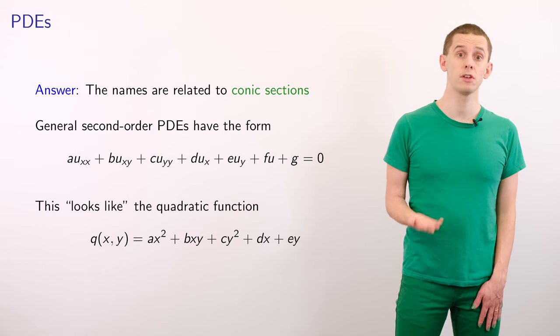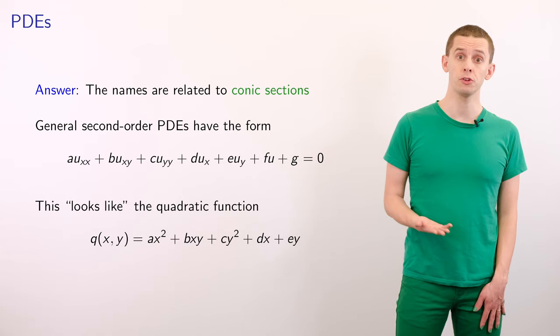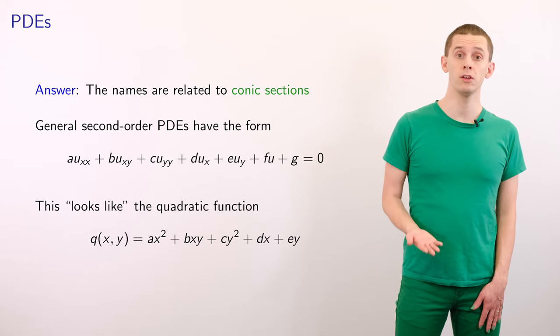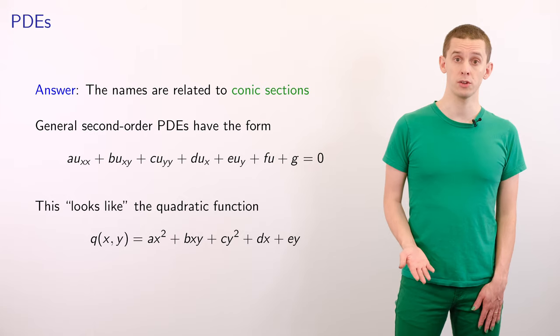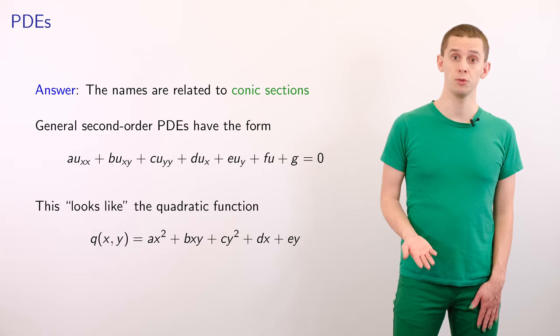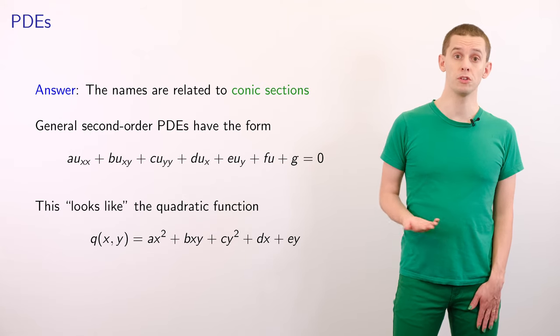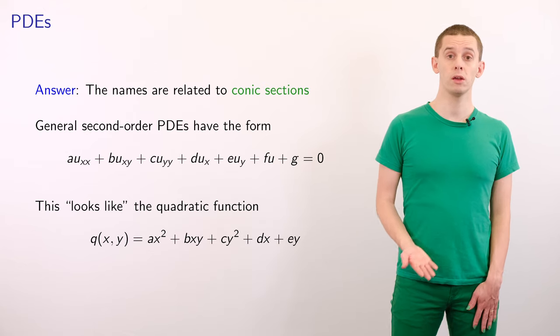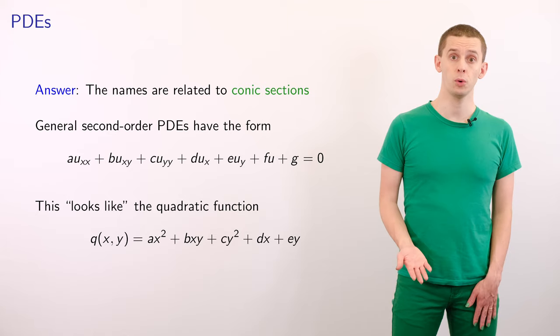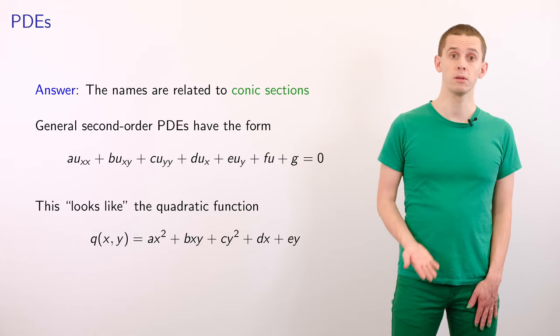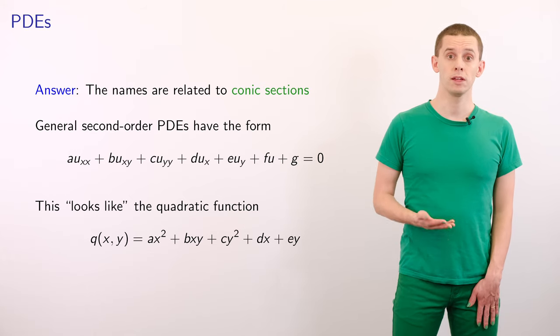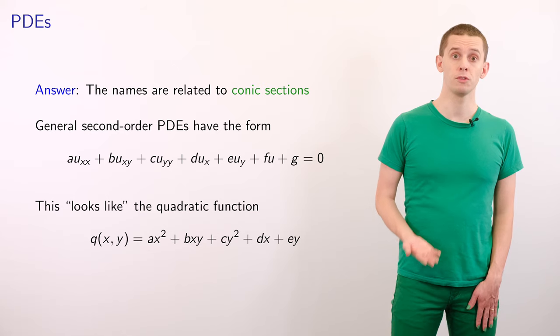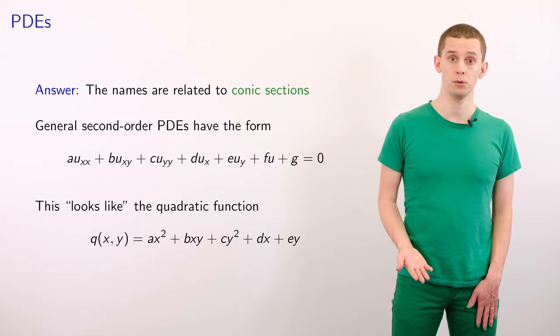So we could write this as a*u_xx plus b*u_xy plus c*u_yy plus d*u_x plus e*u_y plus f*u plus g equals 0. And we could map this onto a corresponding quadratic function q of x and y, which is equal to a*x² plus b*xy plus c*y² plus d*x plus e*y. And now, let's look at performing this mapping for the three prototypical examples that we introduced.